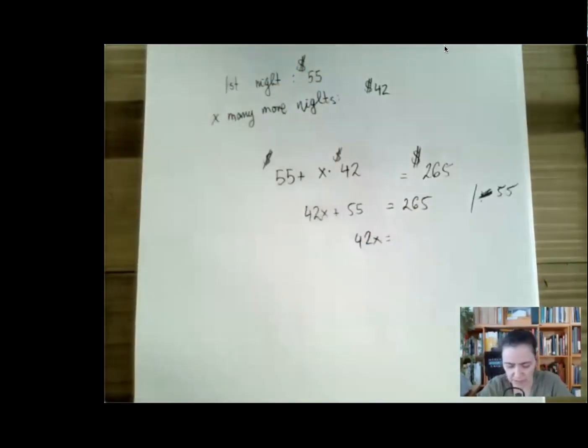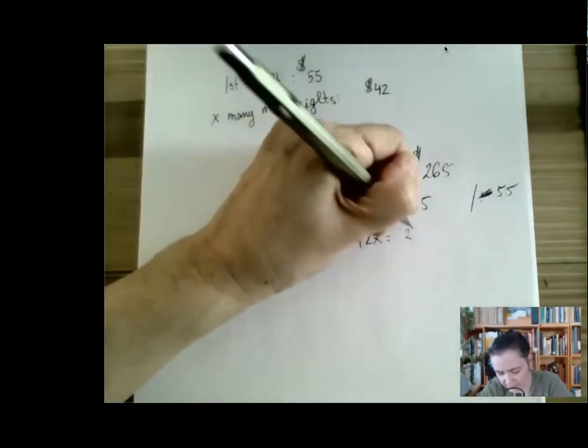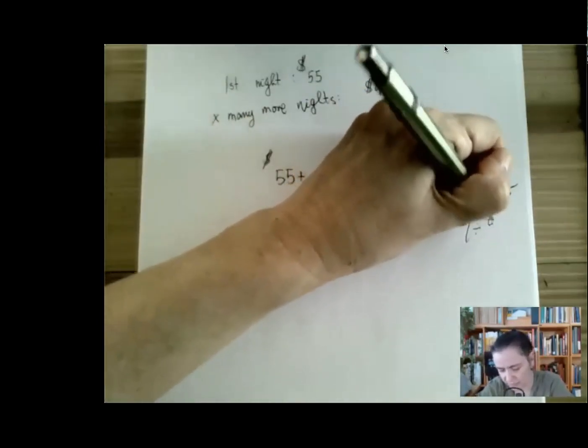So 42X is, could it be 210? Yes. We divide by 42 to get X equals 5.